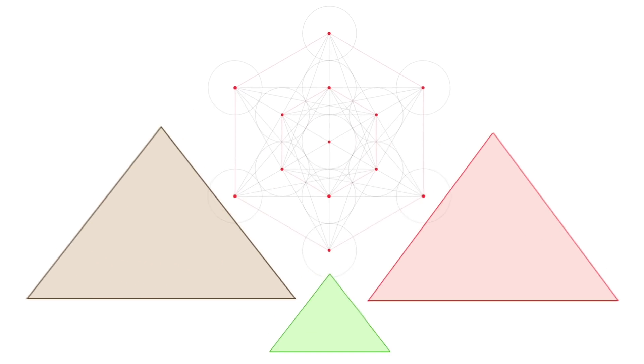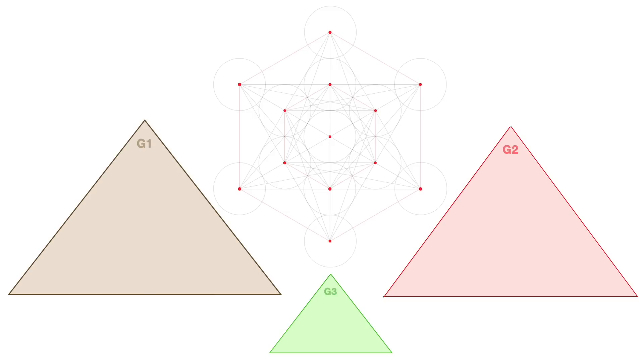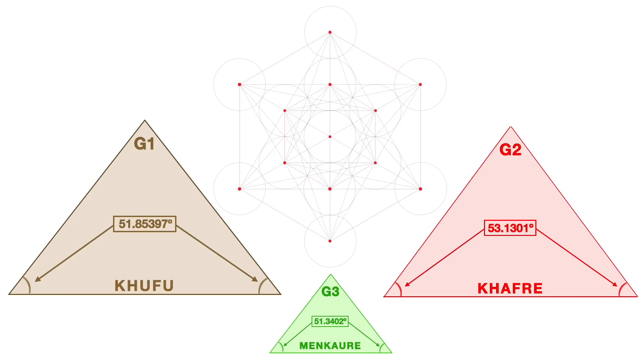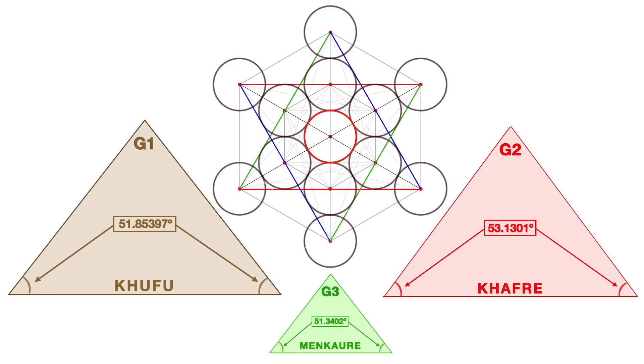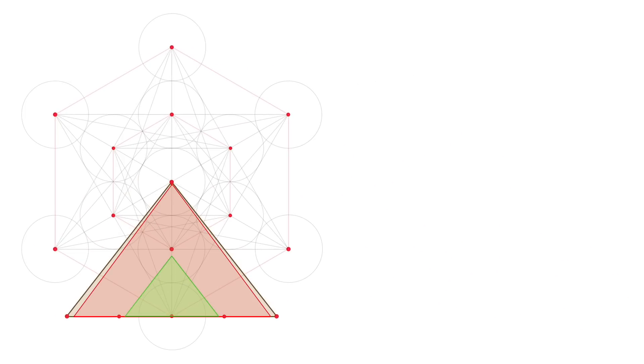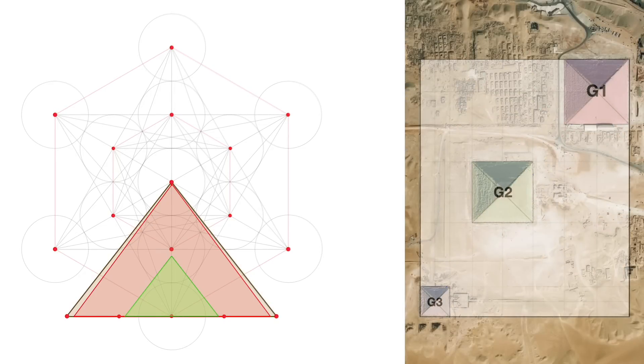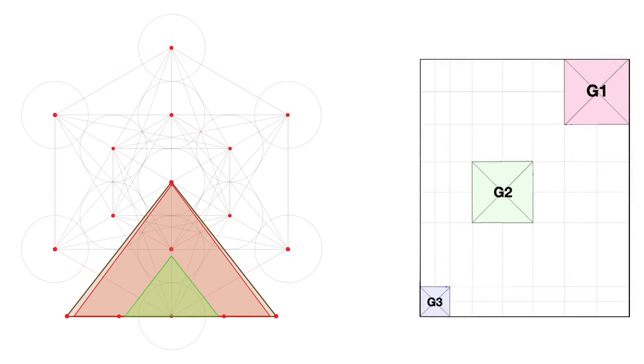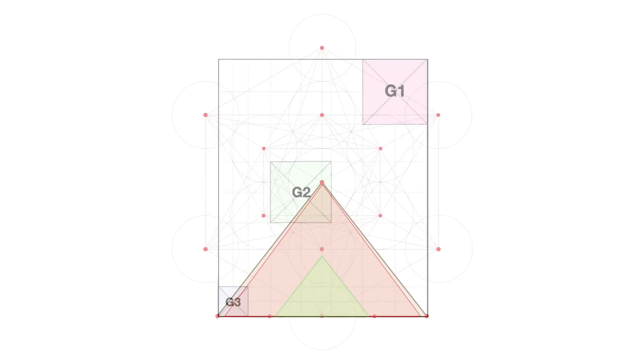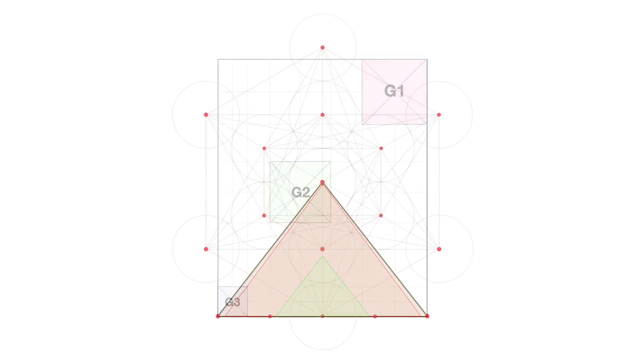We ended part one by showing that the cross-section views of all three of the Giza Plateau pyramids can be derived directly from Metatron's cube simply by tracking the intersections of critical circles, squares, triangles, and diagonals. Part two is going to show that the overhead view of the entire plateau has been encoded into the original design so that the actual pyramid positions can also be located purely by tracking those same basic geometrical intersections.